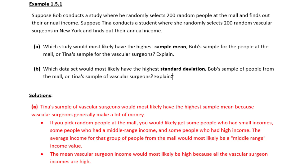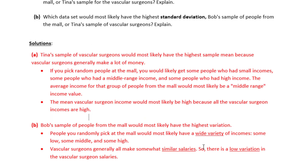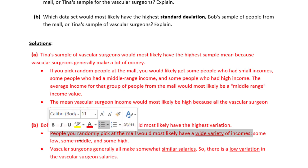Whereas the people at the mall would likely have a high standard deviation in salaries. You would have people at the mall with very low salaries and people at the mall with very high salaries, so the variation in salaries would be high. Since the variation in salaries is high for the people at the mall, they would have a high standard deviation.